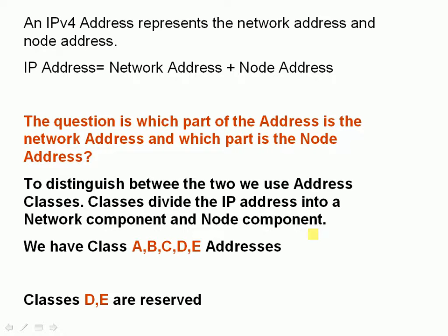An IPv4 address represents both the network address and the node address, so it's basically split into two components: network and node address. The question is which part of the address is the network address and which part is the node address. To distinguish between the two, we use address classes, which divide the IP address into a network component and a node component. We've got five address classes: class A, class B, C, D, and E.